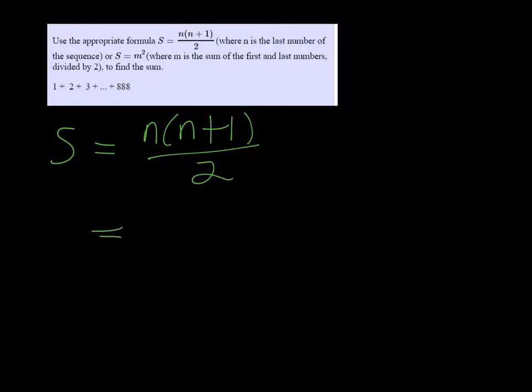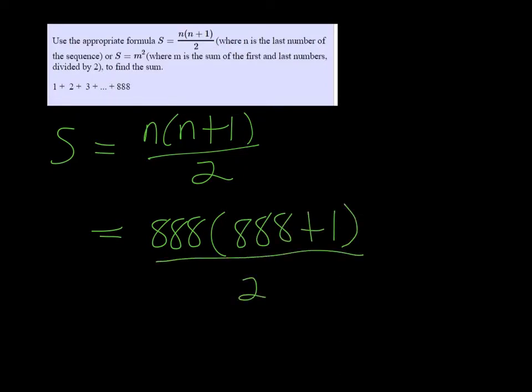n is the last number of the sequence, so it's going to be 888 times 888 plus 1, all over 2. That's 888 times 889, divided by 2.